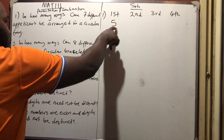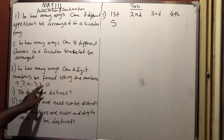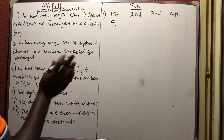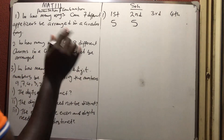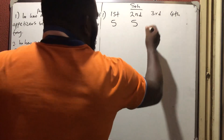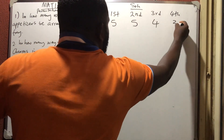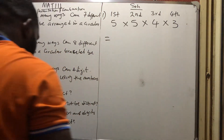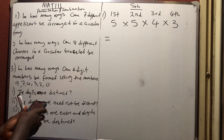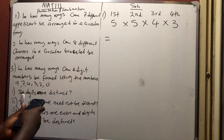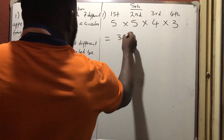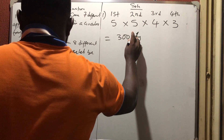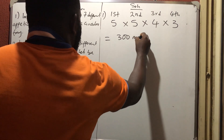Since I've picked the first digit and repetition is not allowed, 5 remain for the second digit. After picking the second, 4 remain for the third, and 3 for the fourth. So the total is 5×5×4×3 = 300 numbers.